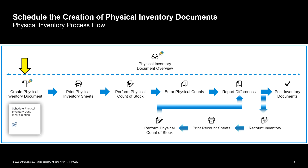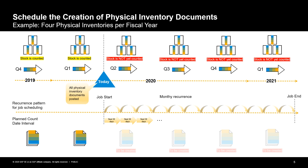Of course you can do this manually in the system. In this microlearning you will learn how to schedule a batch job for physical inventory document creation as an automation step. Before we do this in the system, let's run through an example with four physical inventories per fiscal year in theory.